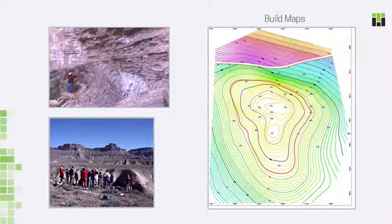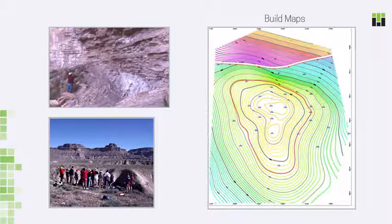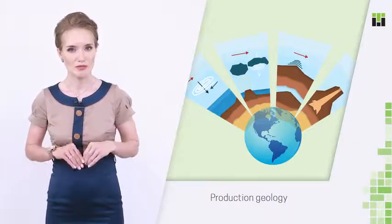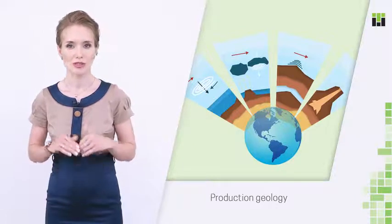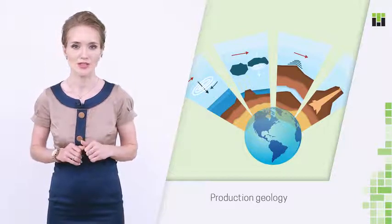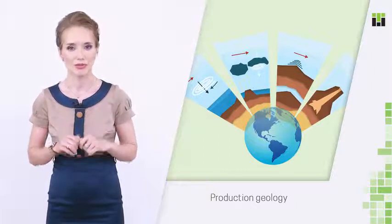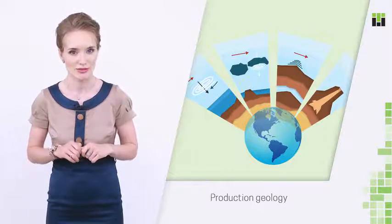As we mentioned before, geologists conduct field surveys in order to build maps and study rock outcrops. They also study information on regional geology, obtain and analyze aerial and satellite images. All these pieces of information are used as blocks for building general descriptions of the area. Geophysicists add their own blocks — information obtained during investigation of processes related to Earth physics.